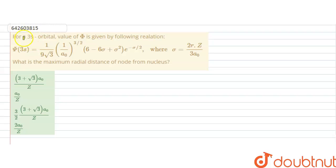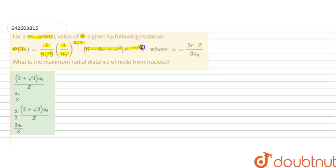Hello students. The question is: for a 3s orbital, the value of psi is given by the relation psi 3s = 1/(9√3) × (1/a₀)^(3/2) × (6 − 6σ + σ²) × e^(−σ/2), where sigma is given as 2zr/(3a₀). What is the maximum radial distance of the node from the nucleus?